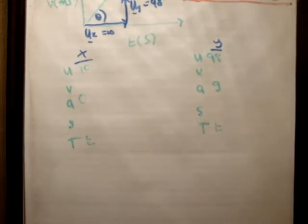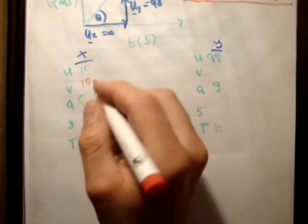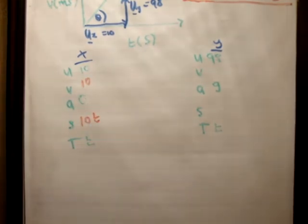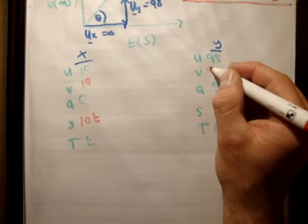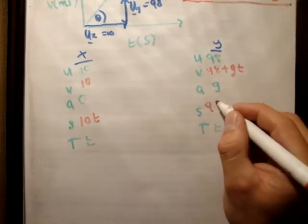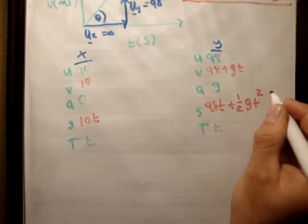Next thing we need to do is fill in the other bits of information that we know. Using the formula v is equal to u plus a t. This is just 10, and this is 10t. This is u plus gt. This is ut plus a half gt squared.